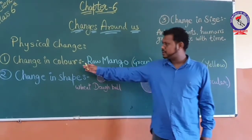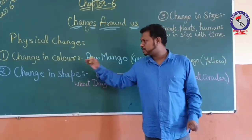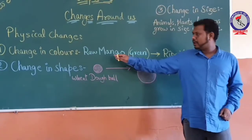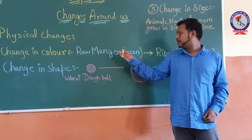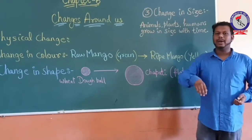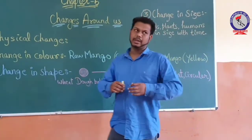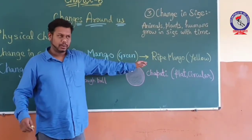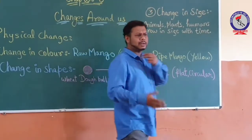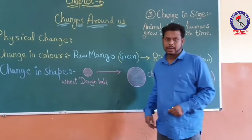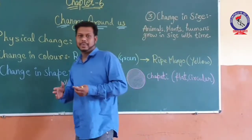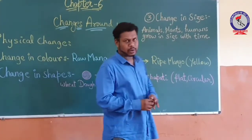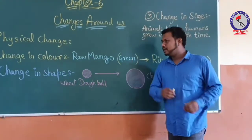The first thing is change in color — it is a physical quantity. For example, a raw mango is green in color, and when it gets mature, the color changes to yellow, that is a ripe mango. There are many other things which change color, like daytime color is bright but at night the color changes to dark.